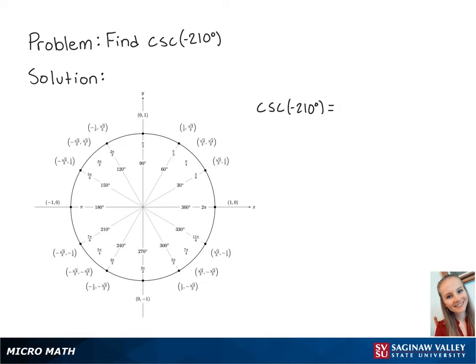For this problem, we're going to find cosecant of negative 210 degrees. Cosecant of negative 210 degrees is equal to 1 over sine of negative 210 degrees.